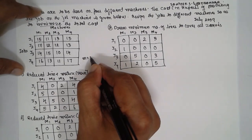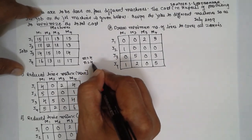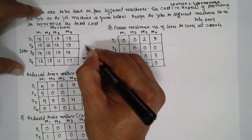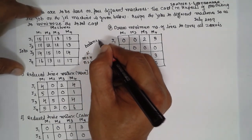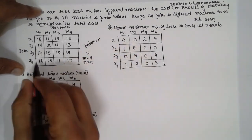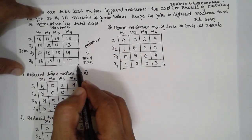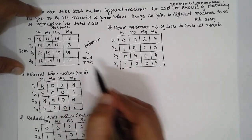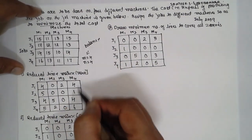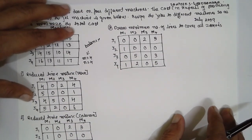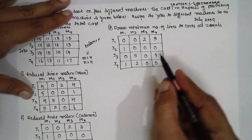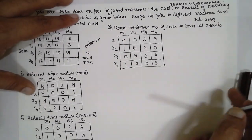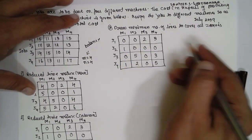This is a balanced problem since m equals 4 (rows) and n equals 4 (columns). If it were not balanced, we would need to introduce a dummy row or column. Since it is balanced, we directly proceed to the assignment step.